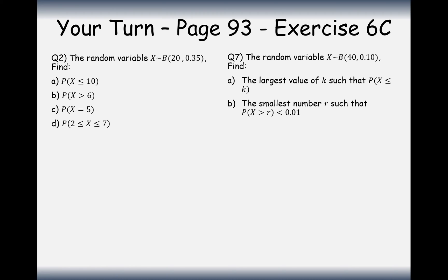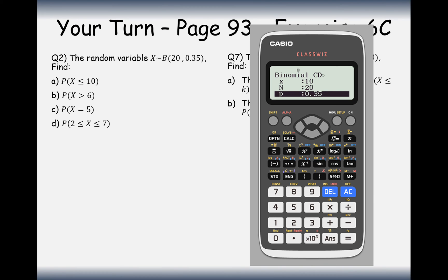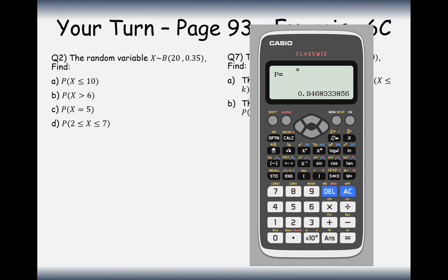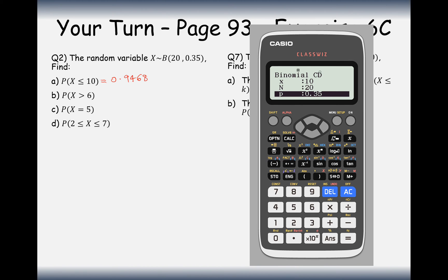We have a random variable X that's binomially distributed with 20 trials and probability of success 0.35. The first question asks for the probability of 10 or fewer successes. That's straightforward in binomial CD mode because it's less than or equal to 10. Enter 10, n=20, p=0.35 in CD mode and you get 0.9468. Make sure you're in CD rather than PD mode — PD would only give you the probability of exactly 10 successes.